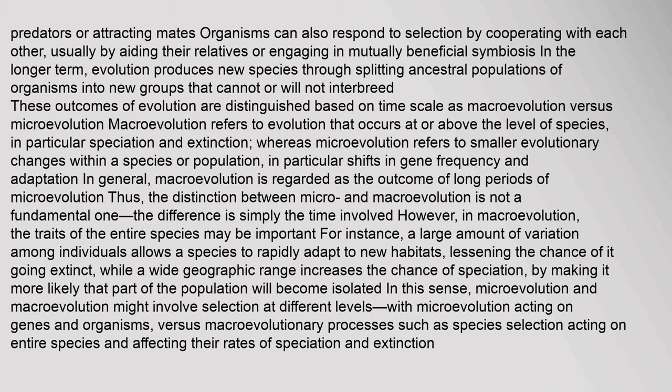These outcomes of evolution are distinguished based on time scale as macroevolution versus microevolution. Macroevolution refers to evolution that occurs at or above the level of species, in particular speciation and extinction, whereas microevolution refers to smaller evolutionary changes within a species or population, in particular shifts in gene frequency and adaptation. Macroevolution is regarded as the outcome of long periods of microevolution, so the distinction between micro- and macroevolution is not a fundamental one — the difference is simply the time involved.